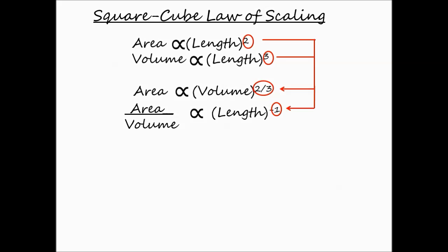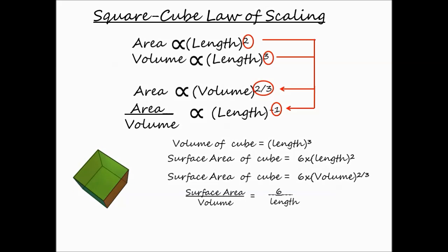To understand this better let's look at the simplest of objects, a cube. Volume as length cubed, surface area as square. Surface area goes as volume to the power of 2 by 3. If the cube were 1 centimeter along the edge then the area is 6 square centimeters, volume is 1 cubic centimeter and area to volume ratio is 6 inverse centimeters. Now if we double the cube length, surface area increases 4 fold but volume increases 8 fold and the ratio halves from 6 to 3.